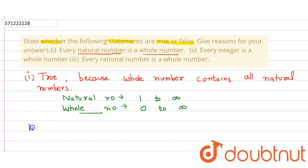Now in the second part of the question, it's given that every integer is a whole number. This is not true. It's a false statement because there are also negative integers.